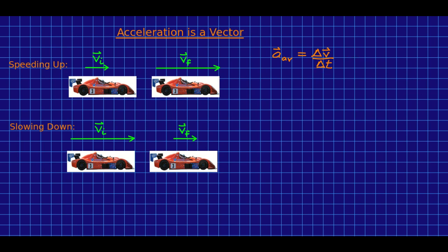The time interval is only going to affect the size of the acceleration, not the direction. So if we just want to figure out the direction, we just need to find the direction of delta v. So let's do that.